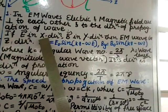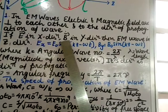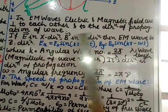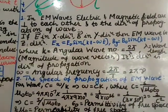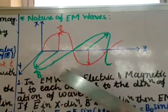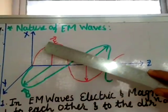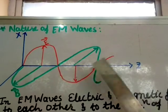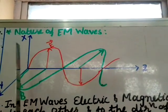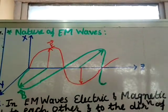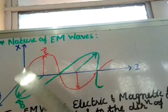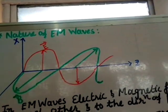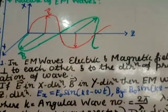If E is in the X direction and B is in the Y direction, then the EM wave propagates in the Z direction. You can see the wave diagram: this is the electric field in the X direction, this is the magnetic field in the Y direction, and then propagation is in the Z direction.